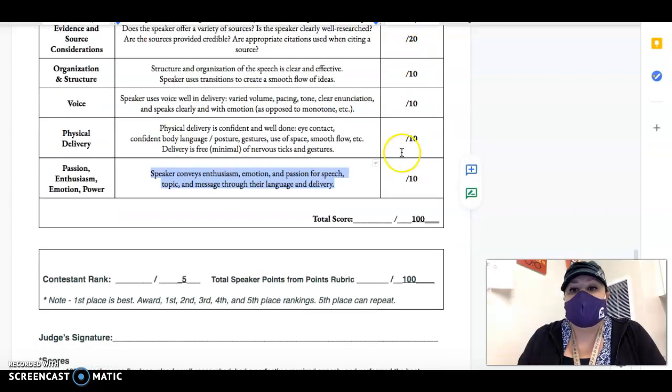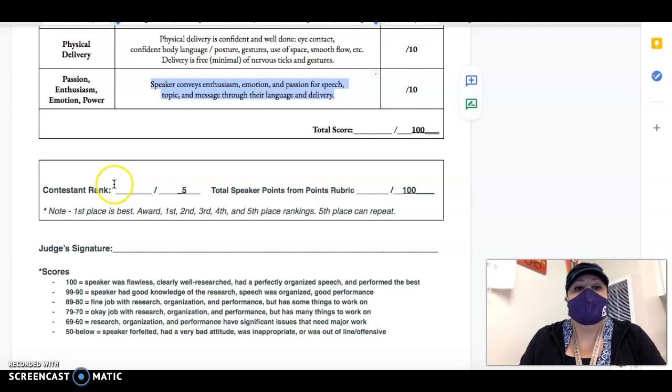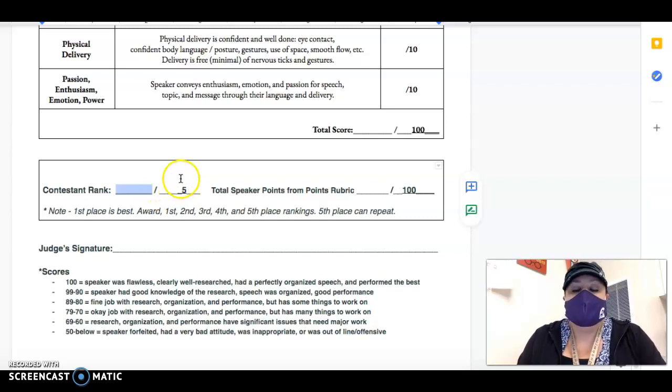So count up your scores from this part and put the total score here. Then when you're going to rank them basically you're going to think about all the speakers you saw. Usually it's anywhere from four to six so out of those kids you saw who was the best? First is best and then second is second best, third is third best. The fifth place is the lowest.